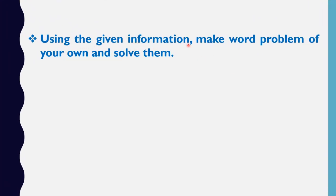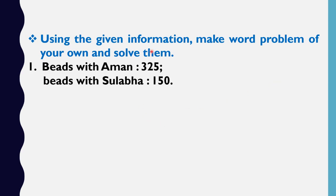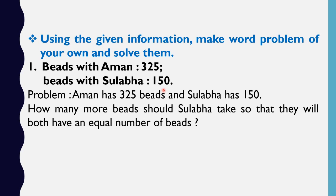Using the given information, make a word problem of your own and solve it. The information given is: Bits with Aman — 325; Bits with Sulba — 150. How many more Bits should Sulba take so that they will have an equal number of Bits?